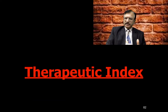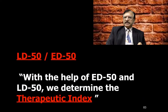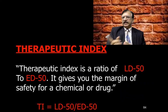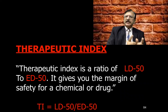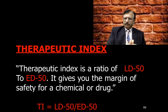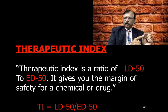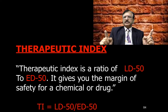The therapeutic index is determined using LD50 and ED50. It is a ratio: Therapeutic Index = LD50 / ED50. This ratio gives the margin of safety of a particular chemical or drug — the distance between the therapeutic dose and the lethal dose.